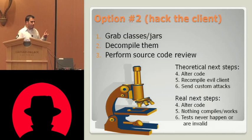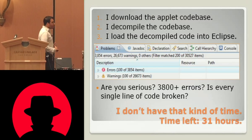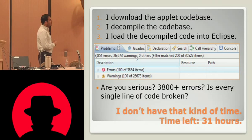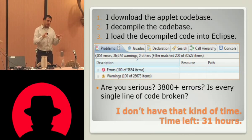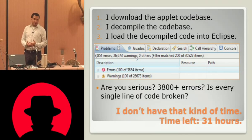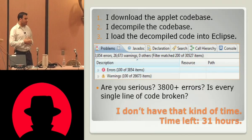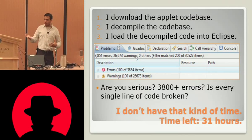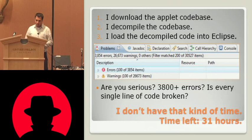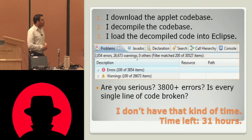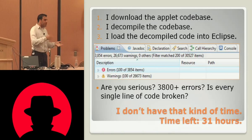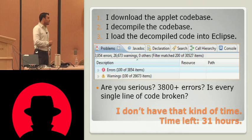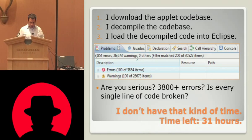So that's option number two — hack the client. Here's what happens when I try it: I just grab the applet code base. It's a binary, just a jar file you download — a compiled binary. But when you decompile it, I ended up with 3,800 errors. We don't have the kind of time to fix 3,800 compilation errors, insert malicious attacks, and expect to get meaningful tests in one week. And time just keeps ticking.